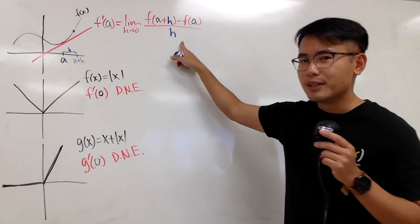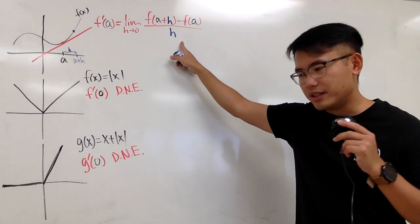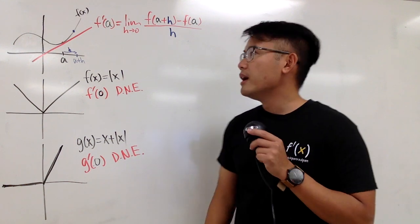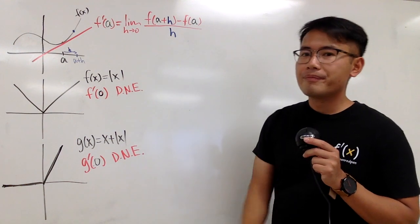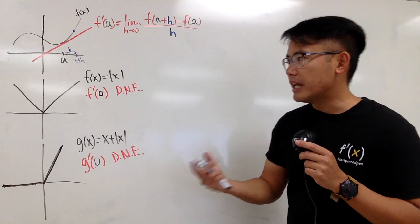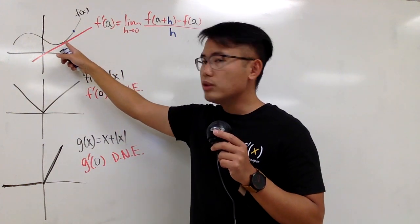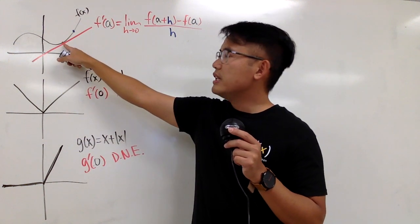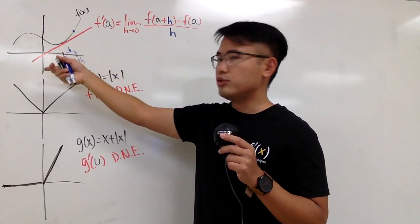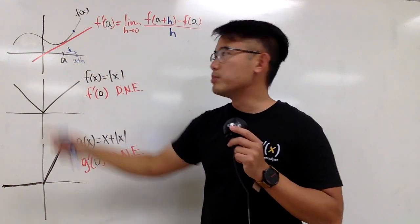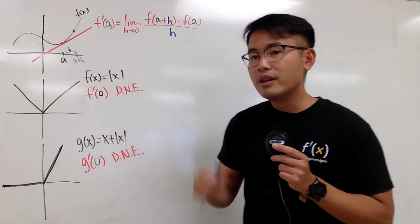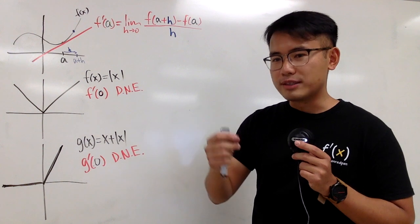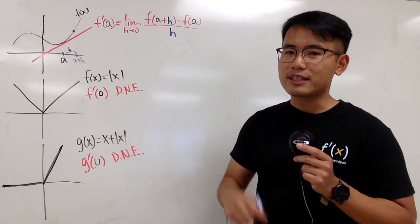As we all know, this right here is the usual definition of the derivative of some function at some point, let's say x is equal to a. The derivative of some function at a is just the slope of the tangent line at a. We are given this point because we are talking about the tangent line. To find the slope of this line, the usual formula says we have to have two points, so we can do y2 minus y1 over x2 minus x1.